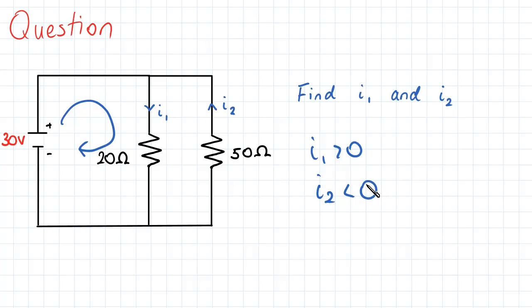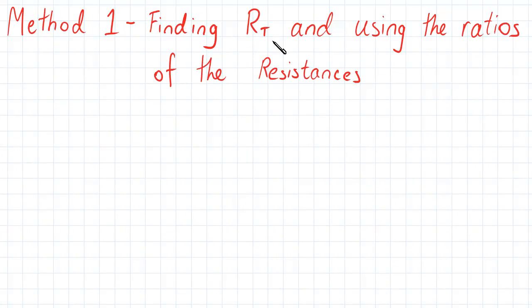So there are two methods to analyzing this question. The first method is through finding the equivalent resistance and then using the ratios of the resistances that we observed earlier.